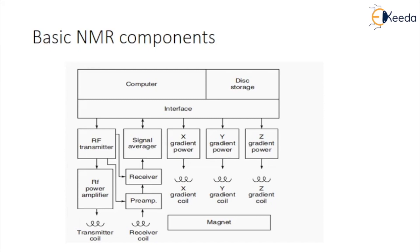The RF voltage is modulated with the pulse envelopes from the computer interface to generate RF pulses that excite the resonance. The pulses are amplified to levels varying from 100W to several kW depending on the imaging method, and are fed to the transmitter coil. The higher power levels are necessary for the large sample volumes encountered in whole body experiments.